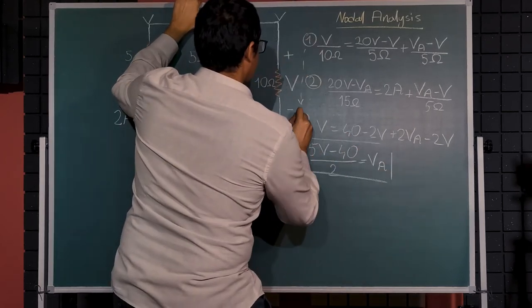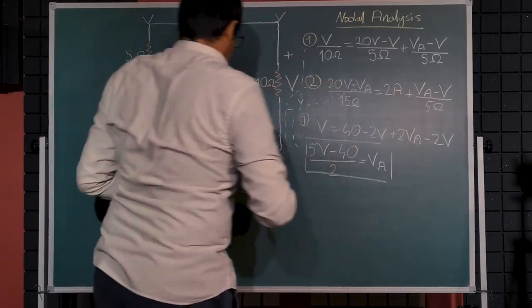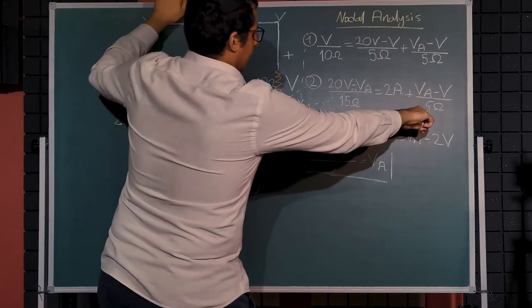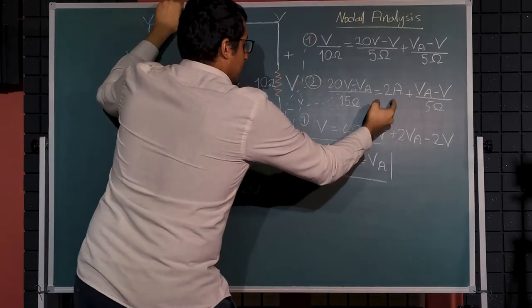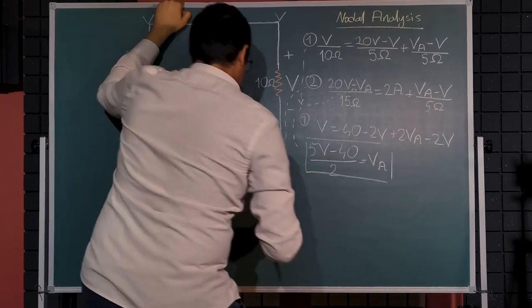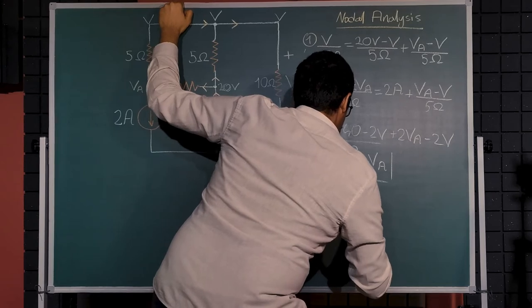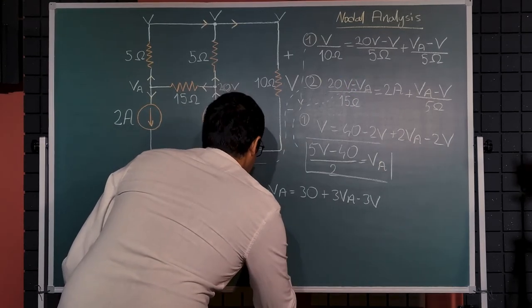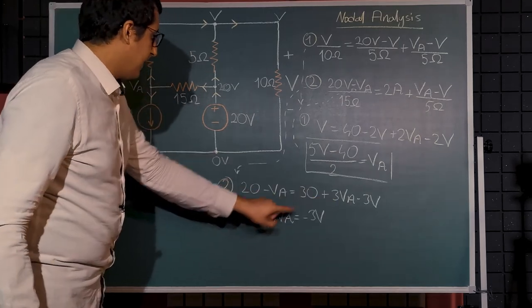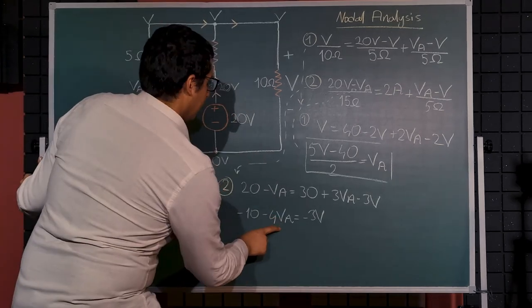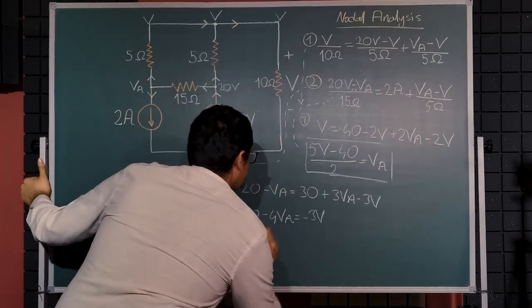Now I can plug this into the second equation. Let's simplify the second one before plugging in. Let's multiply to equate their denominators: this should multiply by 15, this should be multiplied by 3. 20 minus va equals 30 plus 3va minus 3v. Minus 10 minus 4va will be equal to minus 3v.